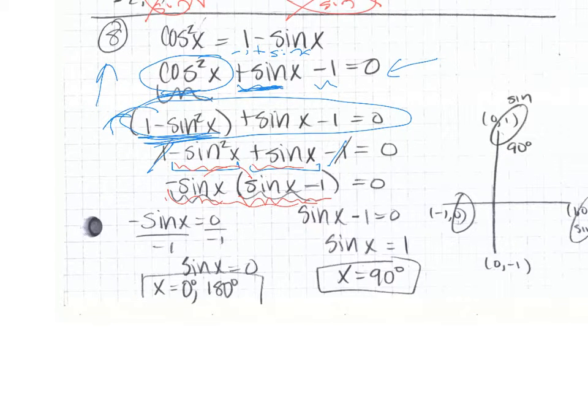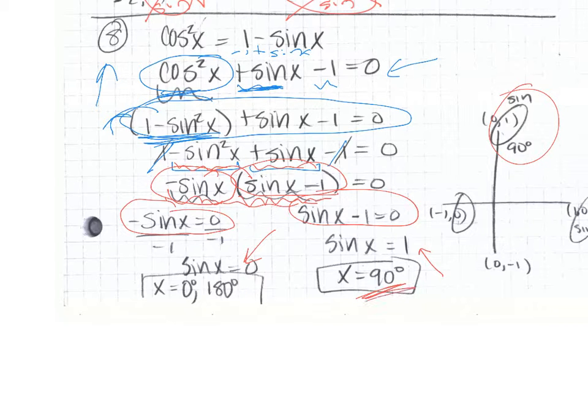Then from there, you set each factor equal to 0 and solve. So we're trying to see where the sine is 0 and where the sine is 1. The sine is 1 at 90 degrees. The sine is 0 at 0 degrees and also at 180 degrees. If you want to write in radians, you can go for it as well. Either way is fine.